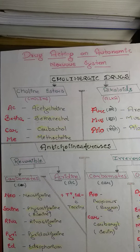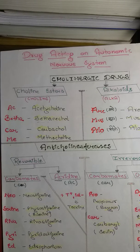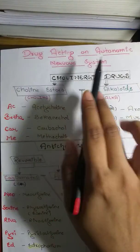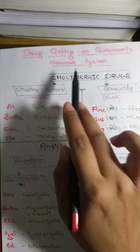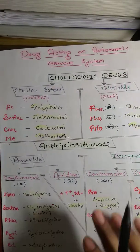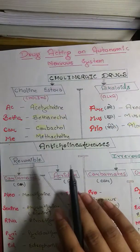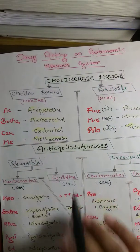Welcome. In this journey of learning, I have come up with people facing problems in classification. This series of videos targets the same audience. Here I will cover every classification of pharmacology from the book. Today we are going to discuss drugs acting on the autonomic nervous system. Our first classification is cholinergic drugs.